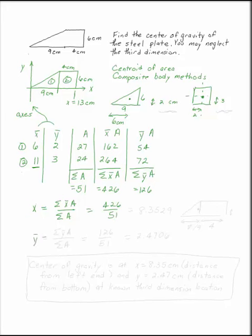Y bar is going to be the sum of the y bar A's over the sum of the A's, which is 126 over 51. That gives you 8.3529 and 2.4706.